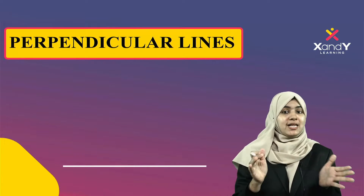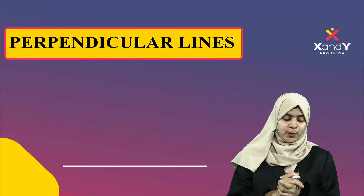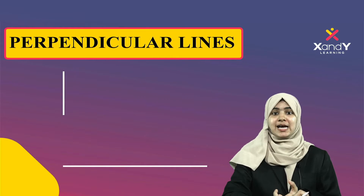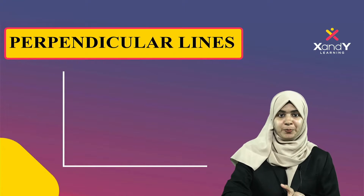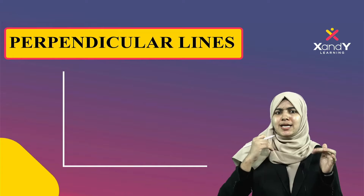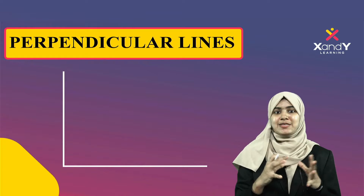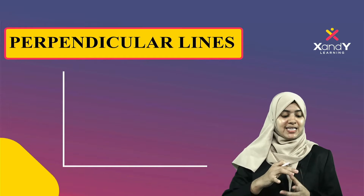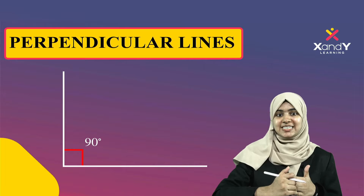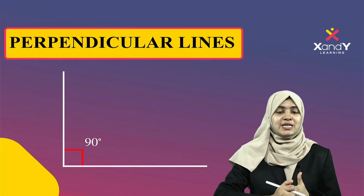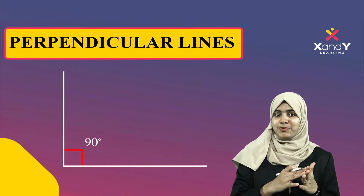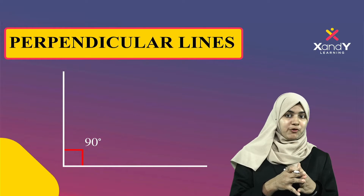Here I have a horizontal line, and here I have a vertical line. These two lines form an angle. This is 90 degrees. If you look at the two lines, the angle is 90 degrees.